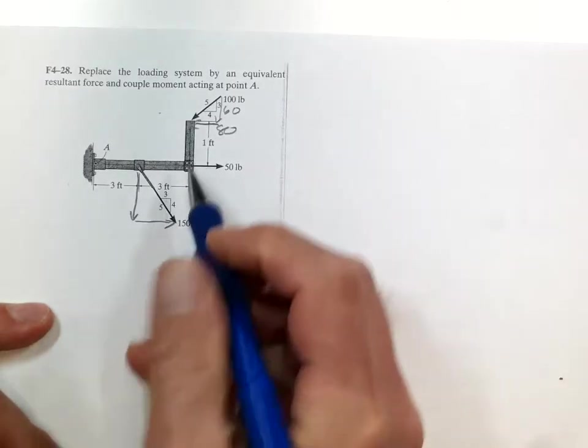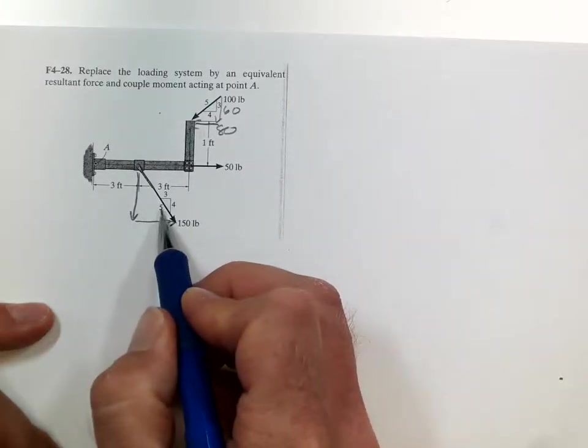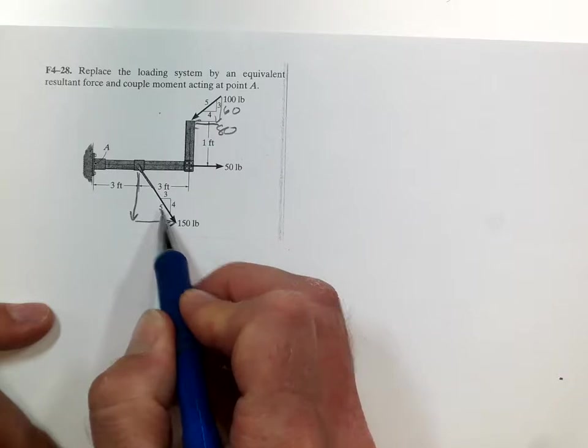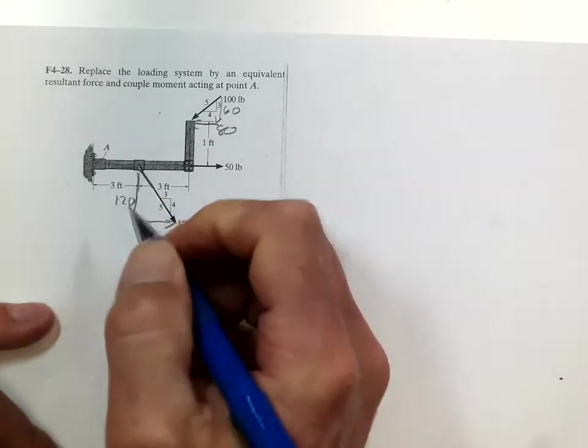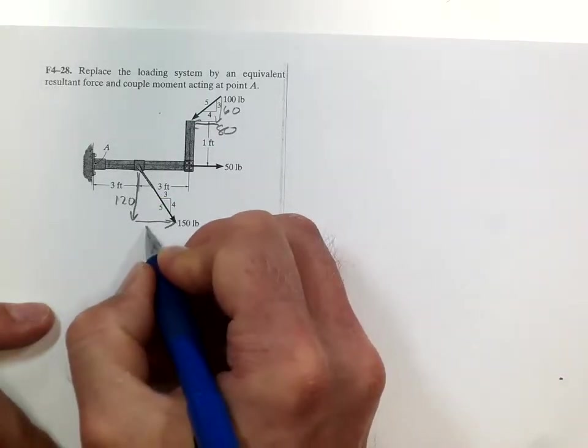So 100 turns to 60 and 80. And another 3, 4, 5. So 30 times 40 would be 120, and 30 times 3 is 90.